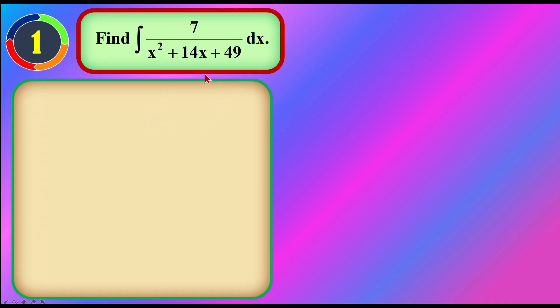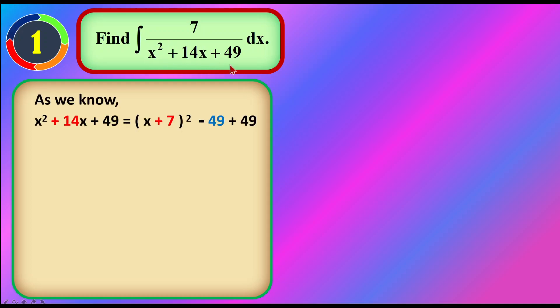Sometimes you will get an equation like this where you need to integrate a rational function. When you look at it, it doesn't have any form or format that you can use in your integration yet. So to start this question, I will suggest that you do a completing the square. In form 6, we do our completing the square very fast because time is very precious for STPM questions.